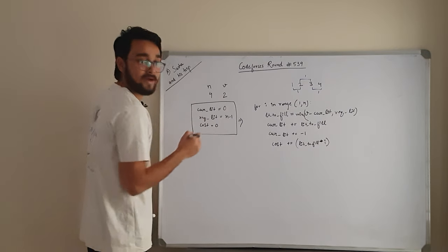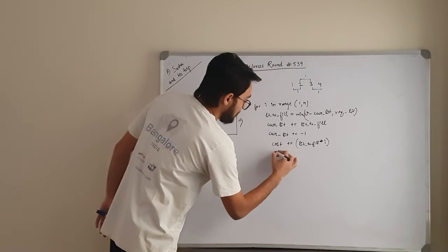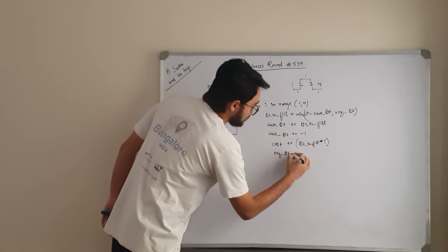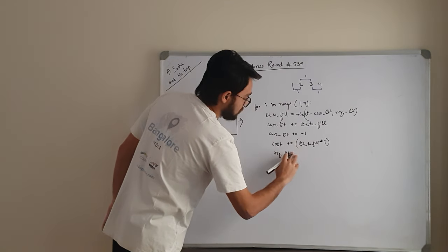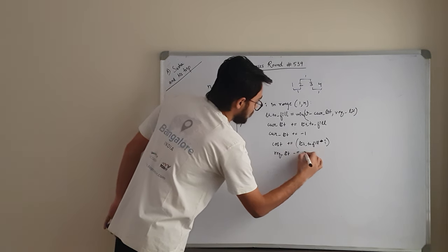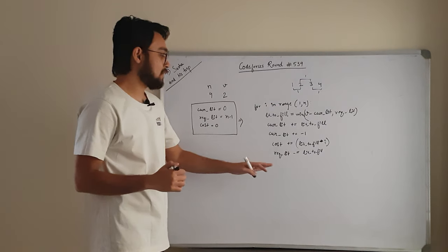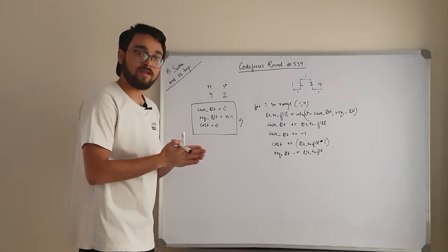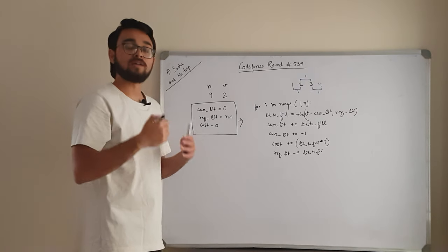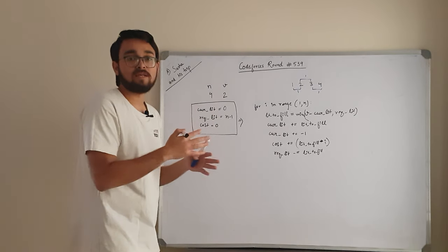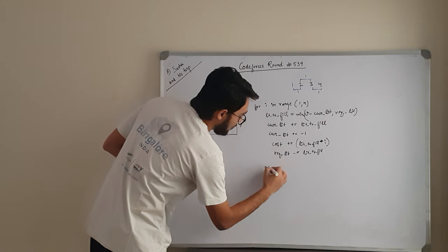Finally, required_liters is decremented by liters_to_fill, because those liters have been consumed. For instance, if the requirement was 5 liters and we consumed 2 at city i, the remaining requirement becomes 3. After the loop completes, print cost — that is your answer.